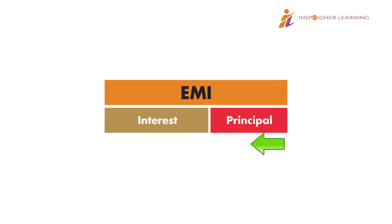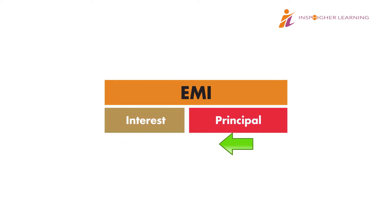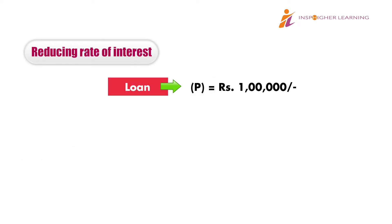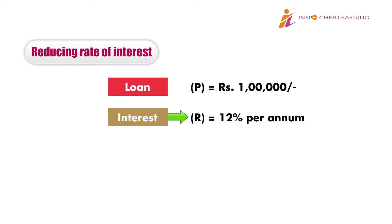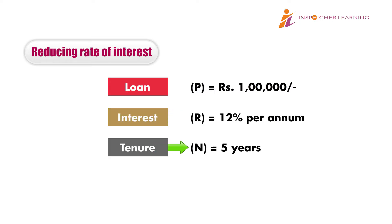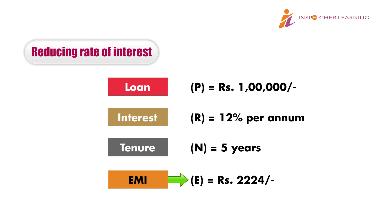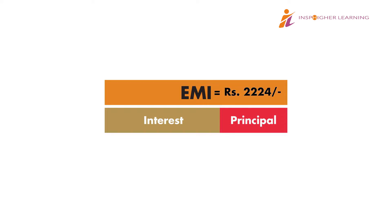The proportion of interest and principal within the EMI keeps changing. To know how, let's use an example. Say, on a loan of 1 lakh rupees, a lender charges 12% interest for a tenor of 5 years. If this is a reducing rate, then the EMI on this loan would be 2,224 rupees. A little later we'll see how this EMI is calculated.